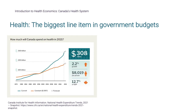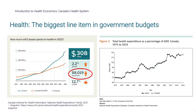In Canada, approximately $8,000 is spent per person per year on health care. Health spending has been growing as a percent of gross domestic product, or GDP, which is a measure of an economy's size, and health care represents the biggest line item in government budgets.